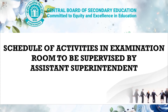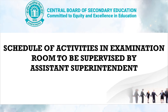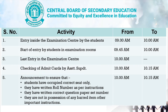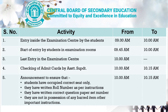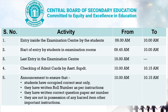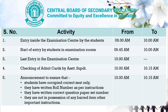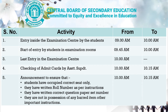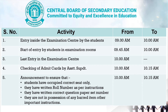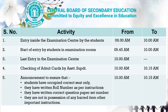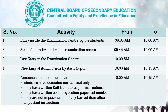Schedule of activities in the examination room to be supervised by the assistant superintendent. First, entry inside the examination center by students is between 9:00 a.m. and 10:00 a.m. Start of entry by students in the examination room is from 9:45 to 10:00 a.m. Last entry in the examination center is 10:00 a.m. Checking of admit card by the assistant superintendent is from 10:00 a.m. Announcement to ensure that students have occupied correct seat numbers, have written roll number as per instruction, have written the correct question paper set number, and are not in possession of any barred item.